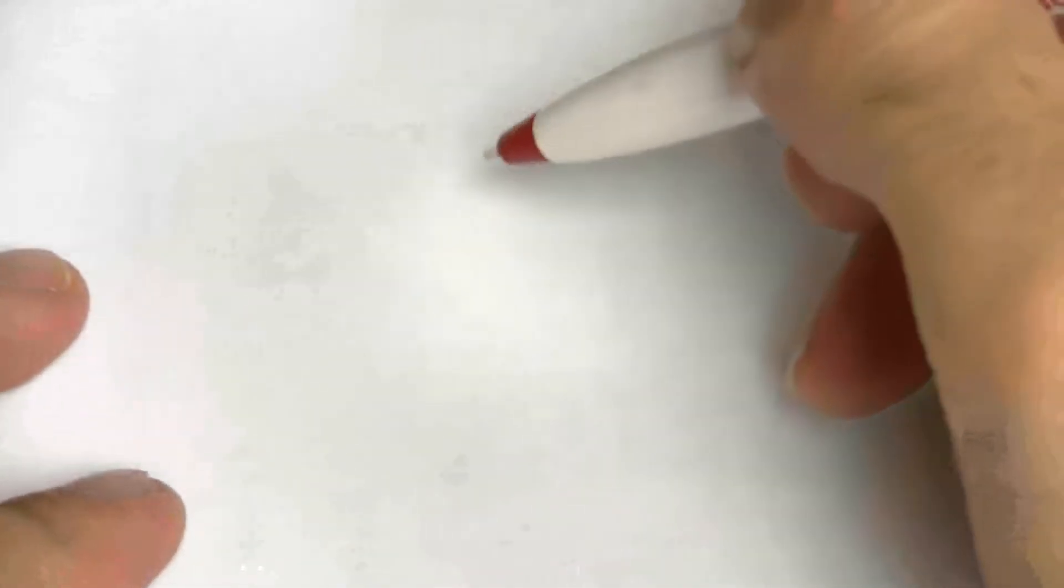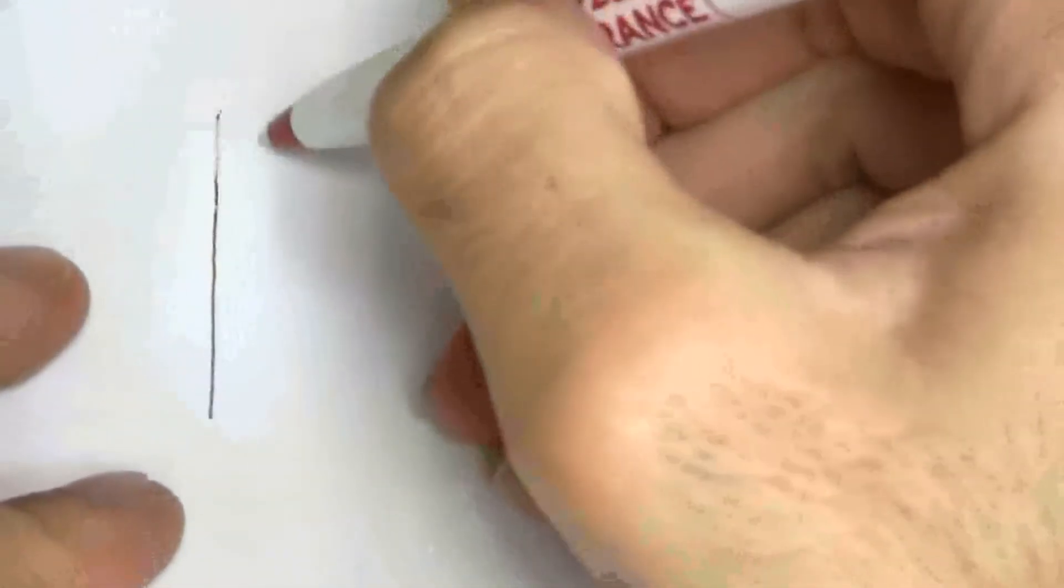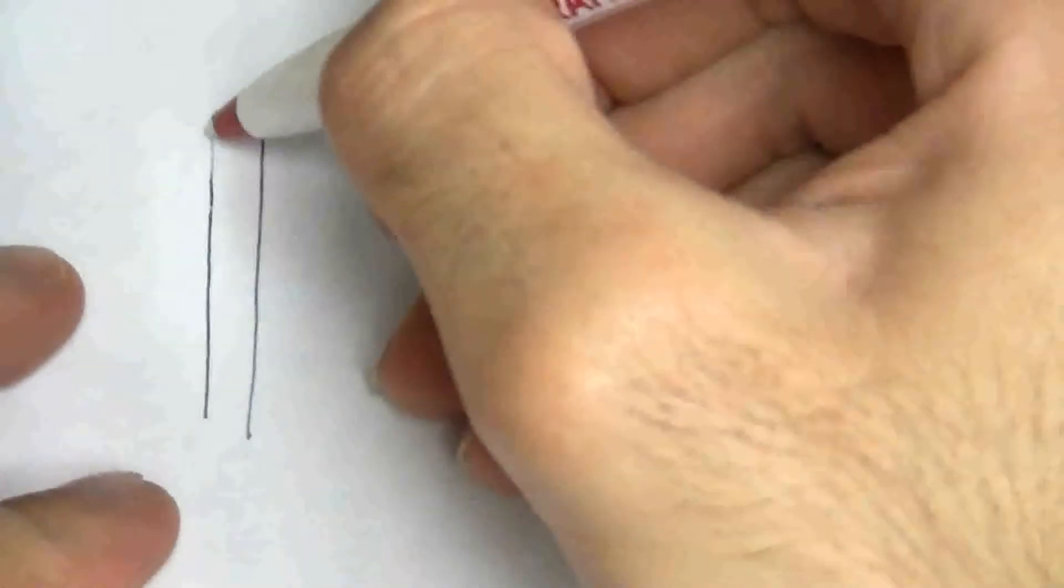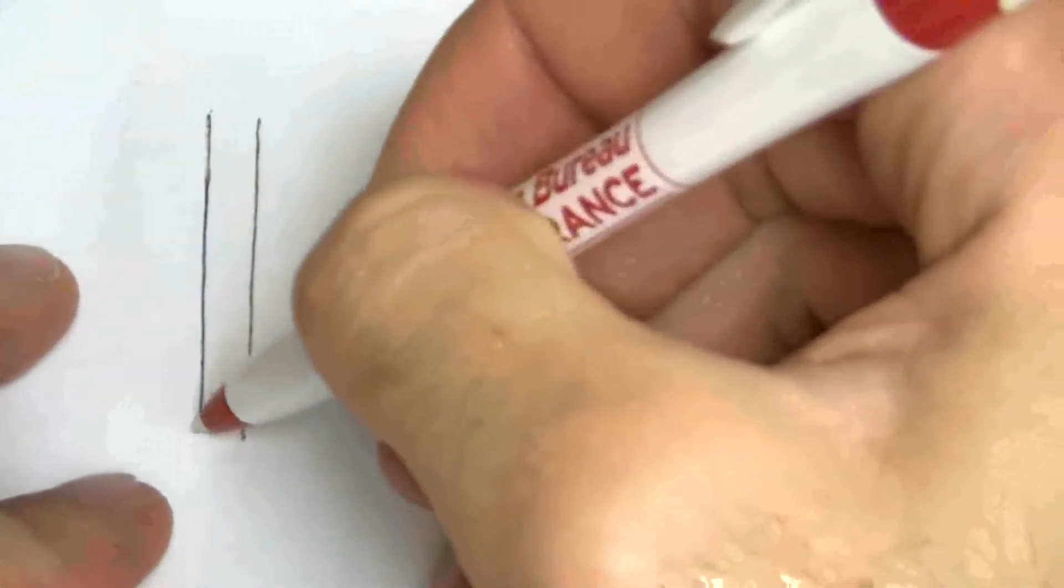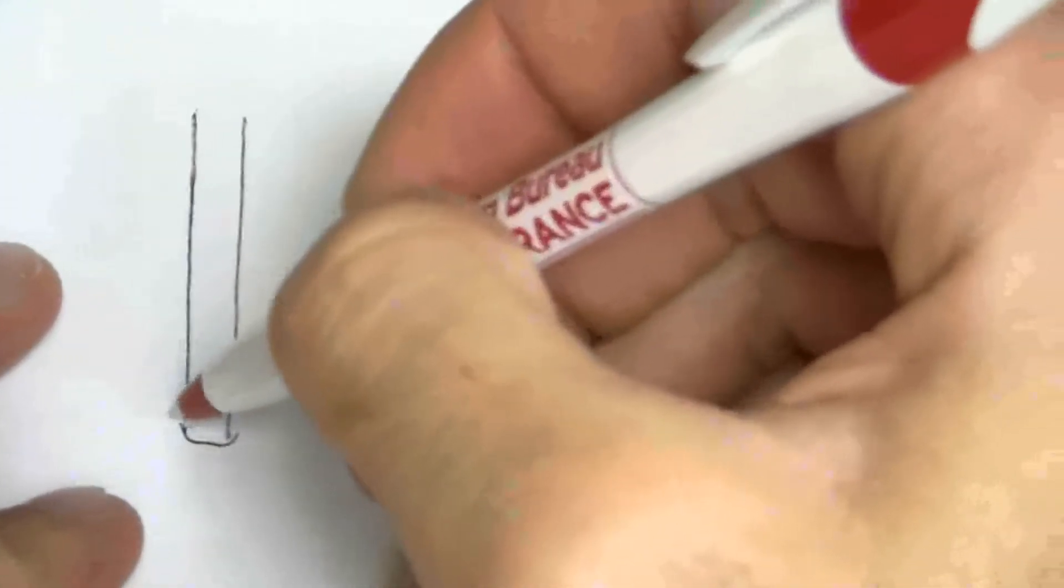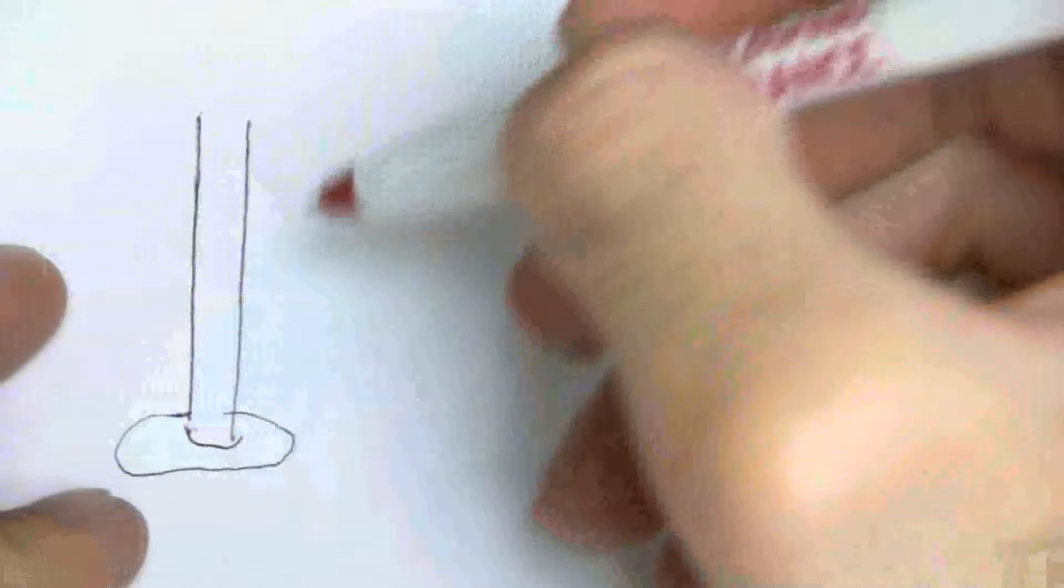If we look at the case of the bicycle pump, let's say this is our pump cylinder. Looks something like this.